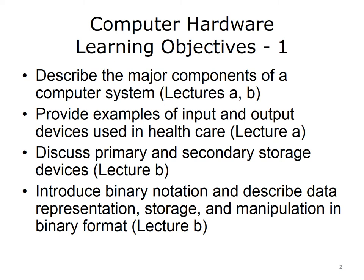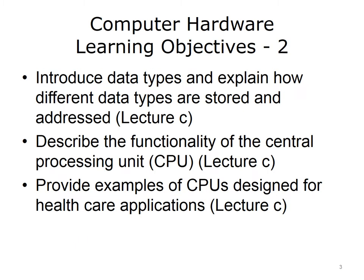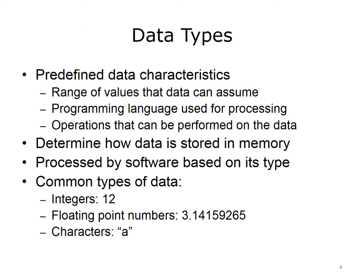The learning objectives for this unit, Computer Hardware, are to describe the major components of a computer system, provide examples of input and output devices used in healthcare, discuss primary and secondary storage devices, introduce binary notation and describe data representation, storage and manipulation in binary format, introduce data types and explain how different data types are stored and addressed, describe the functionality of the central processing unit or CPU, and provide examples of CPUs designed for healthcare applications. In this lecture, we'll be discussing various data types and how each is stored and addressed, and describing the functionality of the CPU in detail.